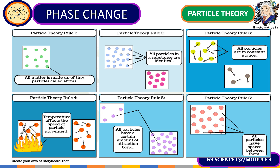Particle theory rule number five states that all particles have a certain amount of attraction or bonding force, which varies depending on whether the substance is solid, liquid, or gas. The last rule is that all particles have spaces between them — whether solid, liquid, or gas — and that spacing enables them to move.